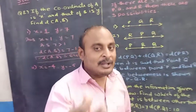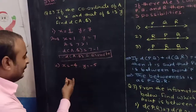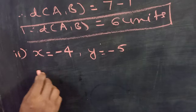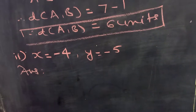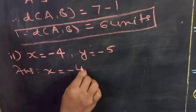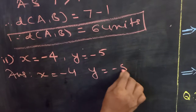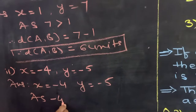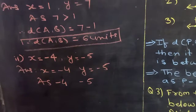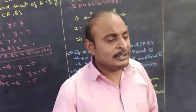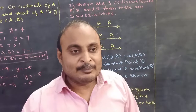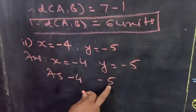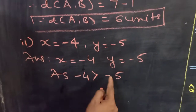Take one more example from your textbook. If X is equal to minus 4 and Y is equal to minus 5, then how can we solve this? Among minus 4 and minus 5, which one will be greater? As I told you in the earlier part, in negative numbers the smaller number is always greater. So here minus 4 will be greater than minus 5.